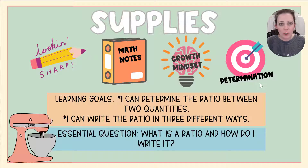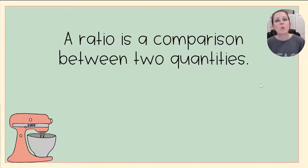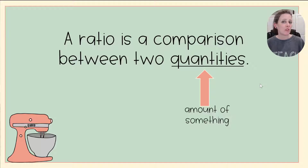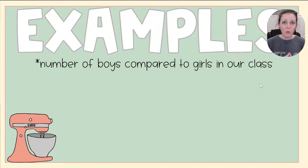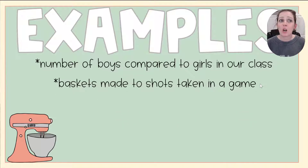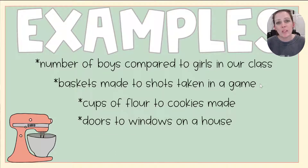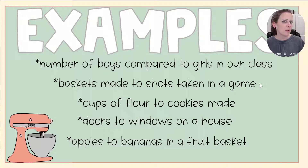So what is a ratio? A ratio is a comparison between two quantities. Quantities is just a fancy way of saying the amount of something. For example, we could write a ratio that compares the number of boys to the number of girls in our class, or baskets made to shots taken in a game, or cups of flour compared to cookies made, or doors to windows on a house, or apples compared to bananas in a fruit basket.